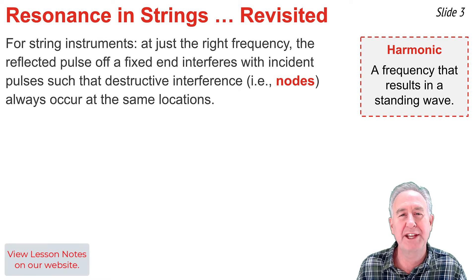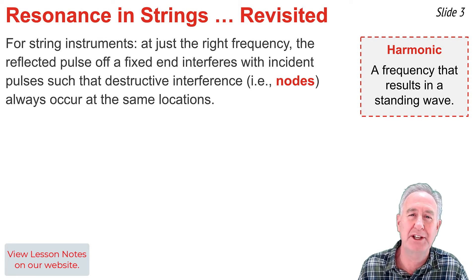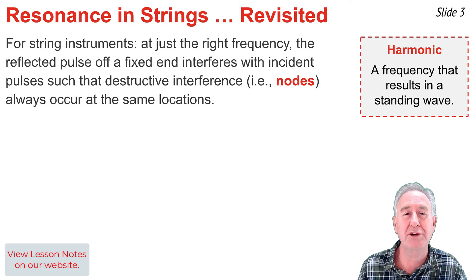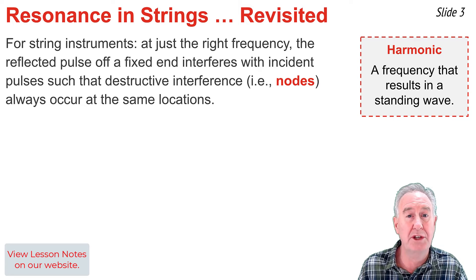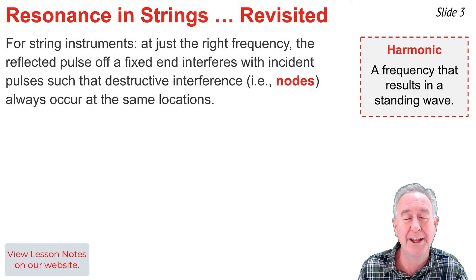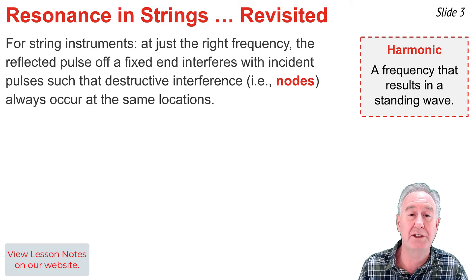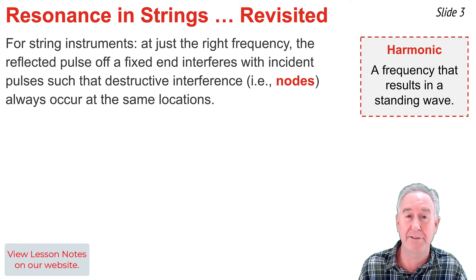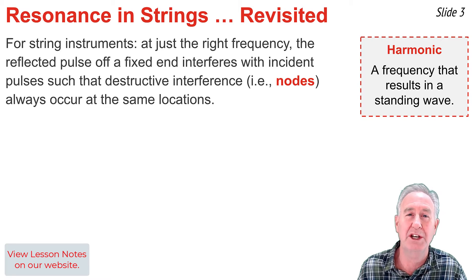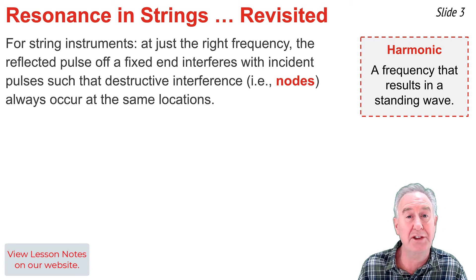Before we discuss resonating air columns, let's review the physics of vibrating strings in order to draw some parallels between these two types of vibrating media. At just the right frequencies, the string can vibrate with a standing wave pattern. Reflections of waves off of the fixed ends will interfere constructively and destructively with approaching waves, producing a pattern of nodes and antinodes always located at the same positions. The frequencies that cause this type of standing wave pattern are known as harmonic frequencies.